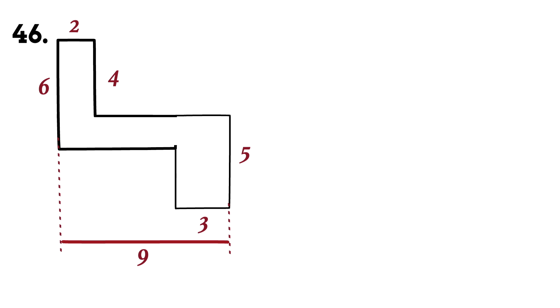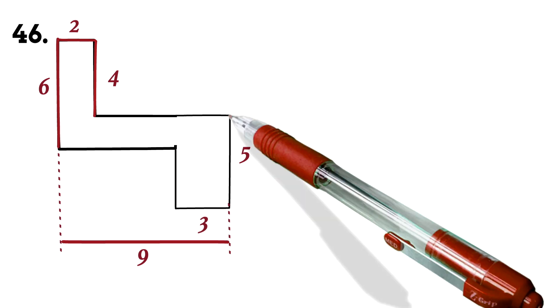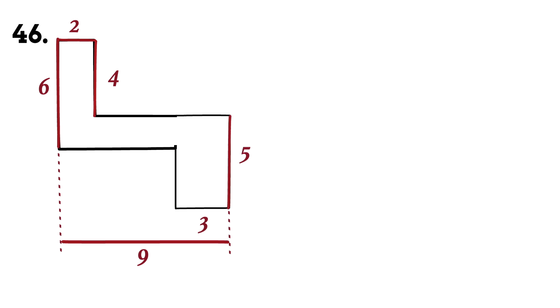Finding the perimeter is finding the distance around the figure. So the hard work is knowing the measure of all the sides. We will solve it the long and general way first. Then we will solve it the easy but specific way. Now, we have been given these sides. This is 6. This is 2. This is 4. This is 5. And this is 3. So we need to find the rest of the sides. That requires a little work.